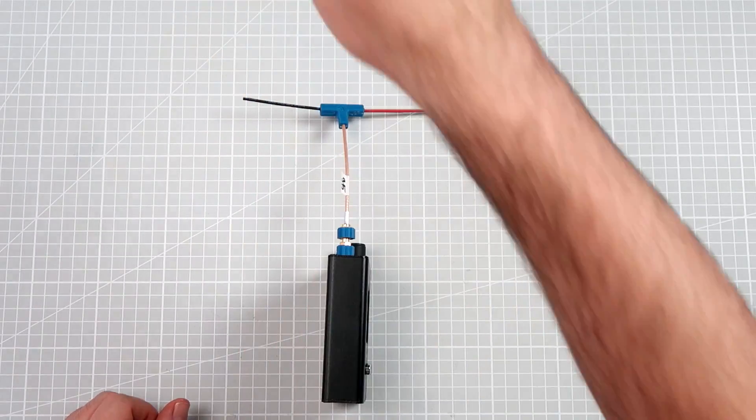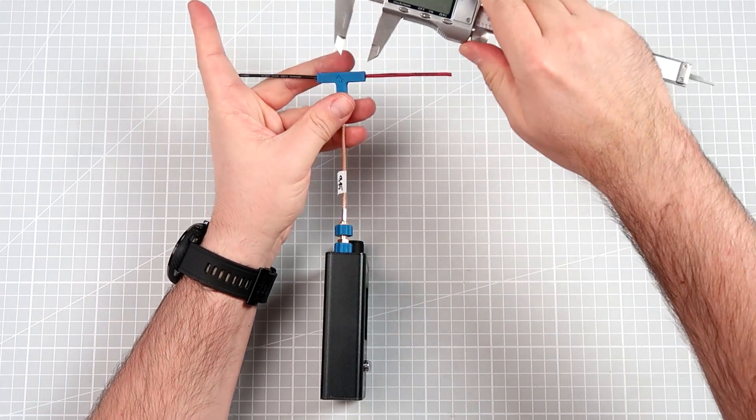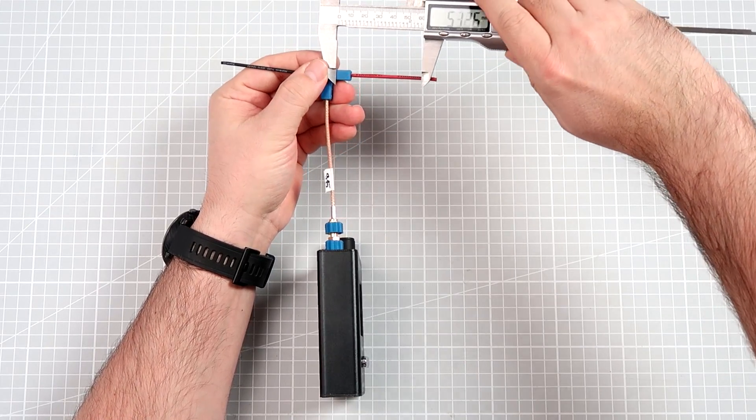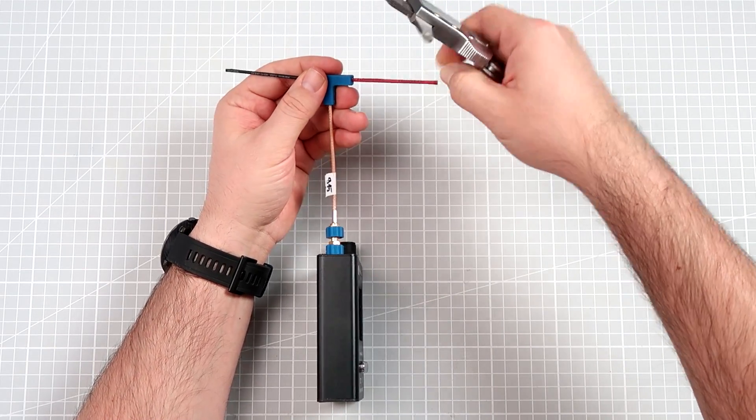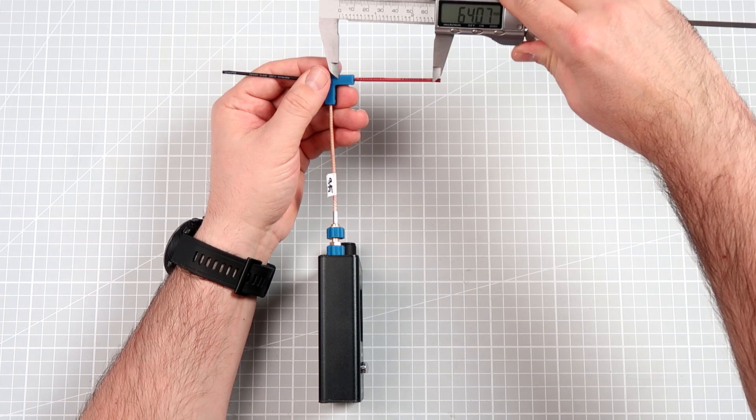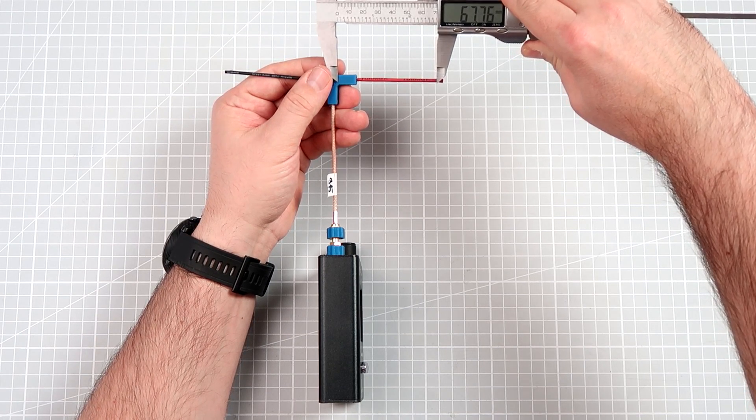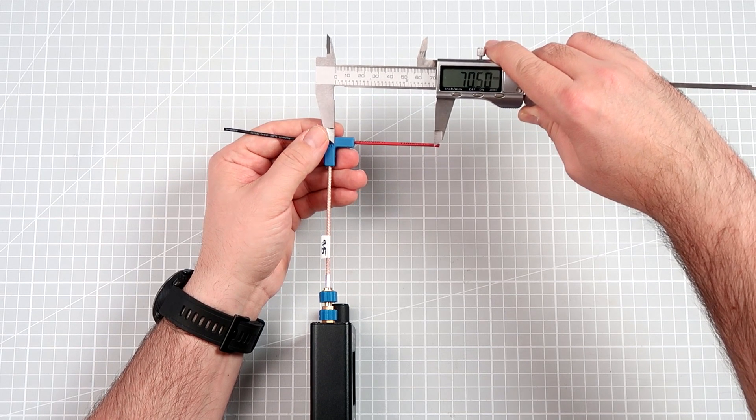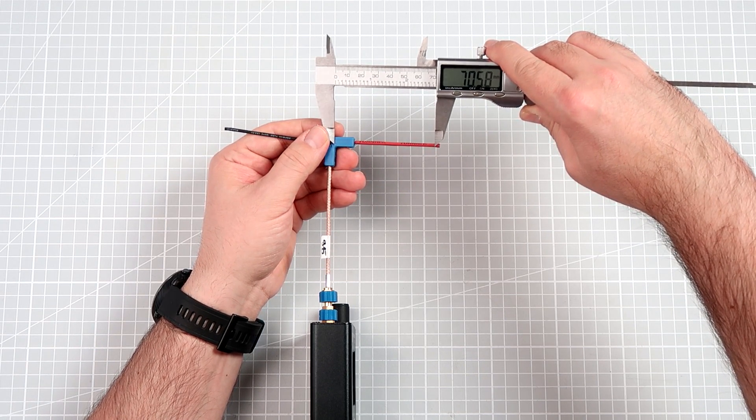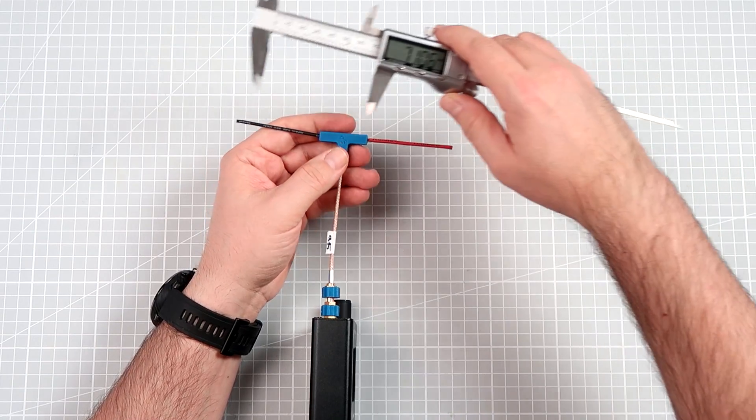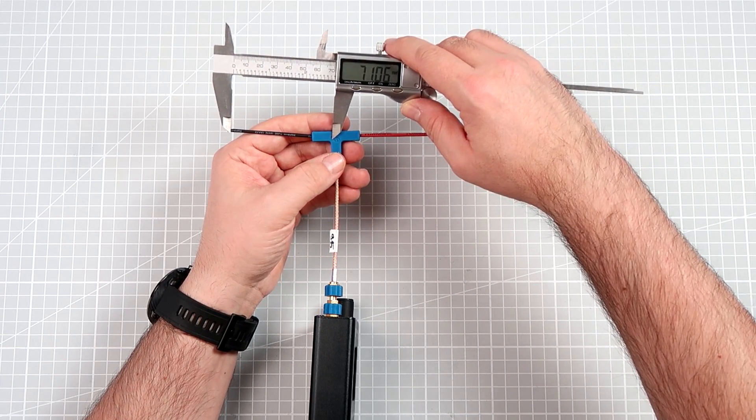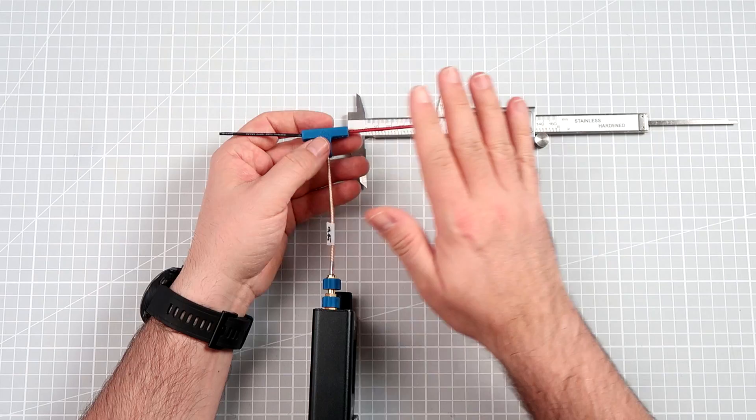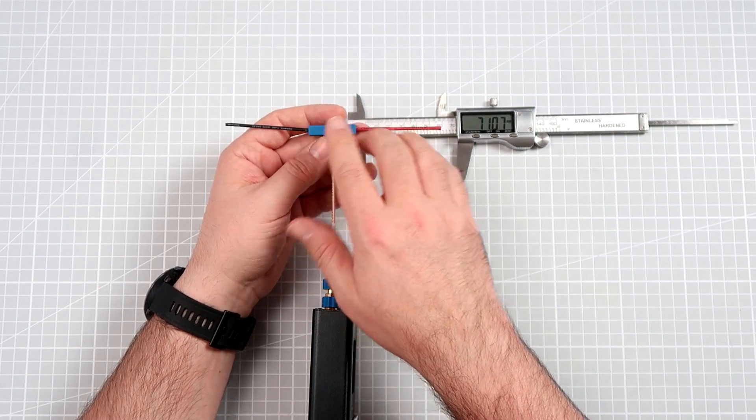First let me take my caliper and let's measure the length of the antenna right now. It's from here to here. So the active element is 70-71 mm. The same goes for the passive element.